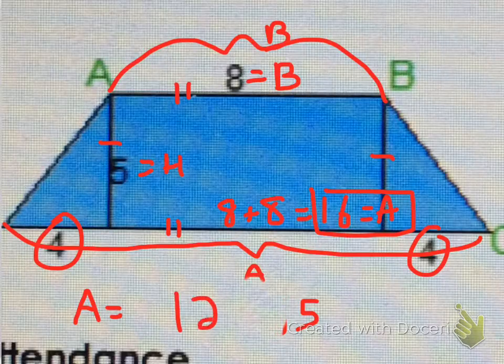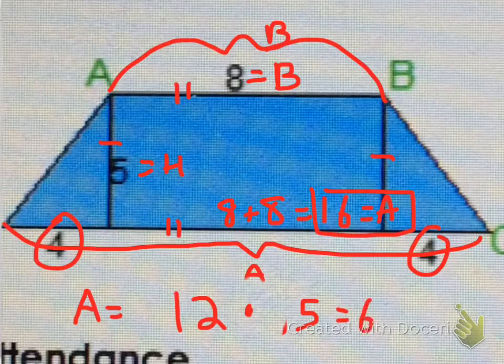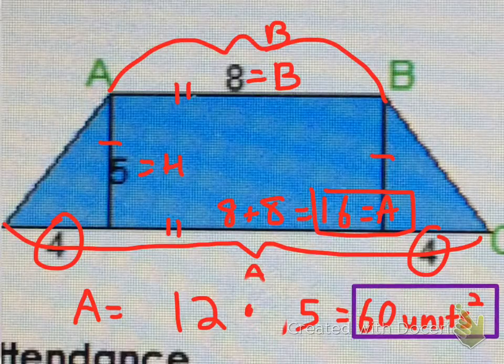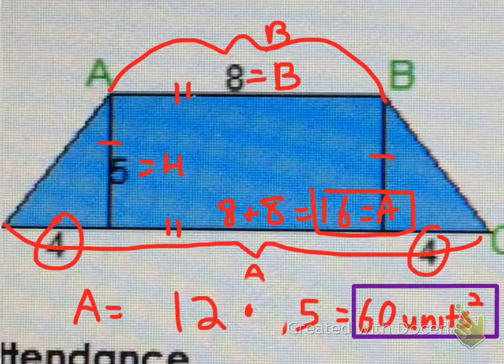And then we have 12 times 5, and that's going to give us 60, so it's going to be 60 units squared. And there you have it. There's our answer for today's question.